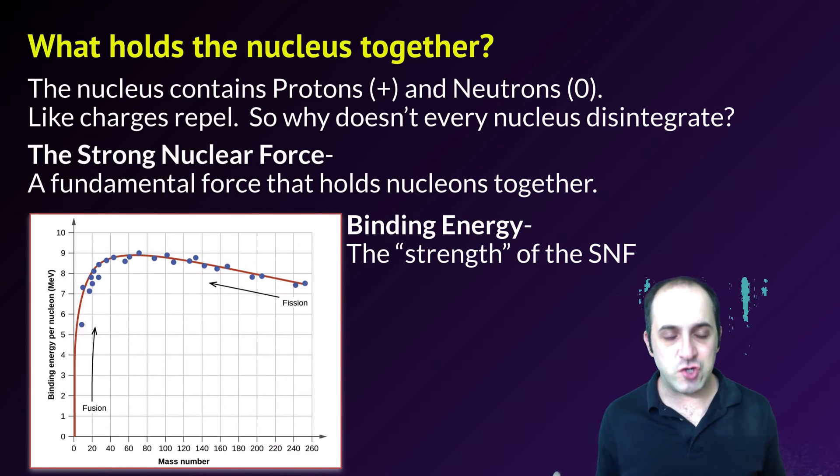There's just not enough energy in order to hold all of those nucleons together. And so once we get above element number 83, once we get above bismuth, everything that we see after that is unstable, or what we call radioactive.